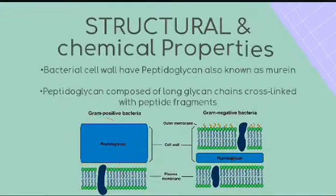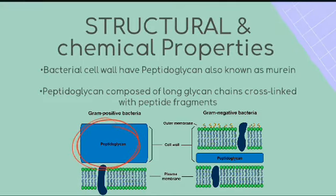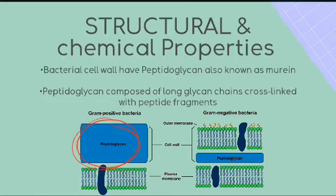The bacterial cell wall has a unique type of polymer known as peptidoglycan, also known as murein. The composition of peptidoglycan is formed when peptides and sugars combine together to make a conjugated molecule — the resultant molecule is the peptidoglycan, also known as mucopeptide. Peptidoglycan is composed of long glycan chains cross-linked with peptide fragments.